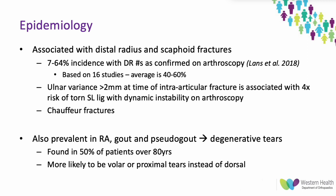In terms of epidemiology, scapholunate ligament injuries are often associated with distal radius fractures and scaphoid fractures, specifically intra-articular fractures such as the radial styloid chauffeur fracture. Studies show a wide range from 7 to 64% incidence in distal radius fractures, with most studies reporting roughly 40 to 60%, ranging from partial tears to complete full-thickness tears with static and dynamic instability.